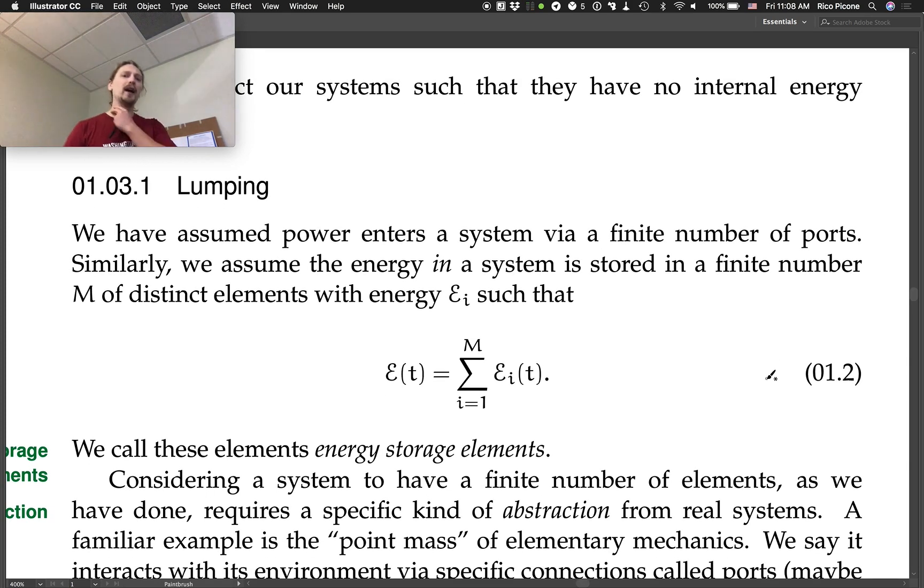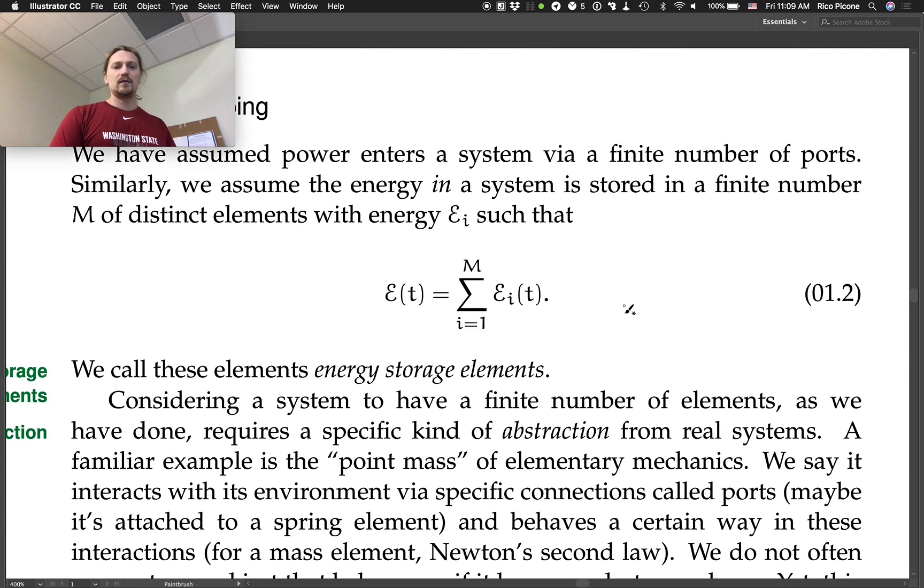We have assumed power enters the system via a finite number of ports. Similarly, we assume the energy in a system is stored in a finite number M of distinct elements with energy Ei, such that the total energy is equal to the sum of the energy in each distinct element. We call these elements energy storage elements. To give a couple examples, in our electronic systems we've had capacitors that store energy, we've had inductors that store energy, and in mechanical systems we'll see that a mass can store energy through kinetic energy, and that a spring could store energy through being compressed or stretched.